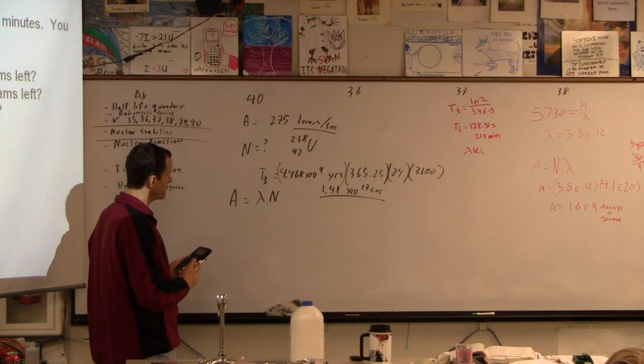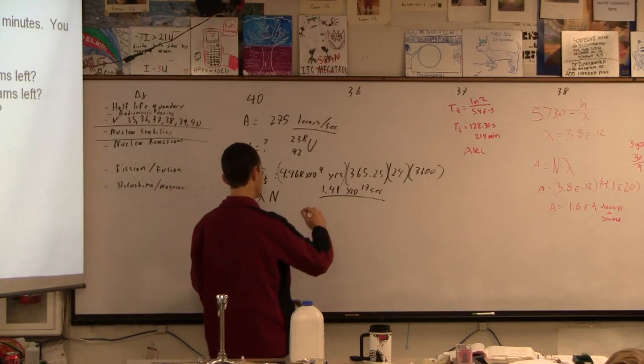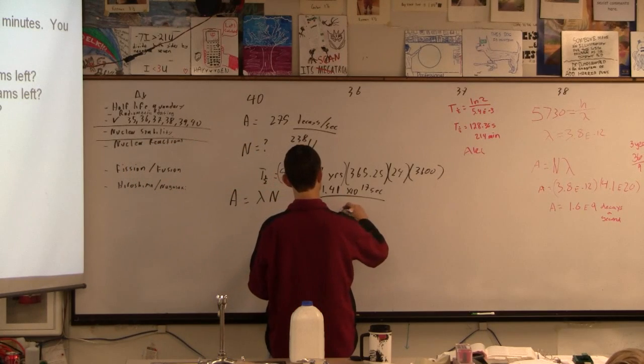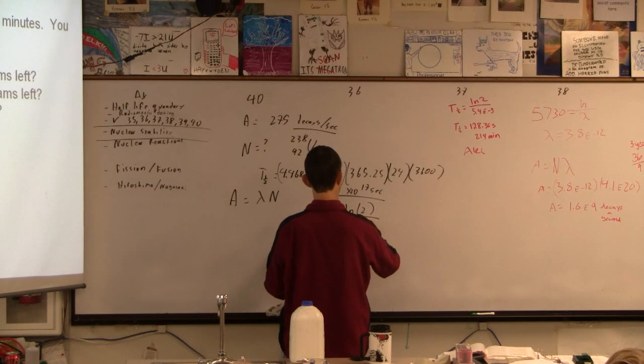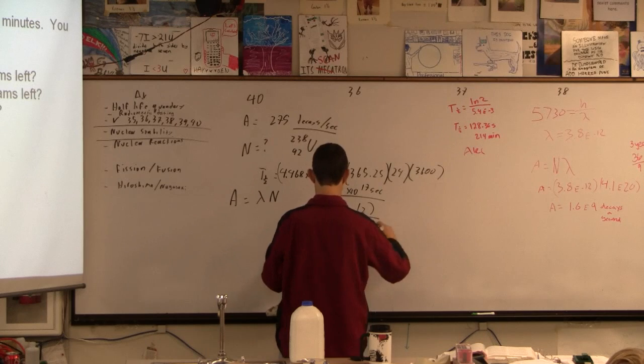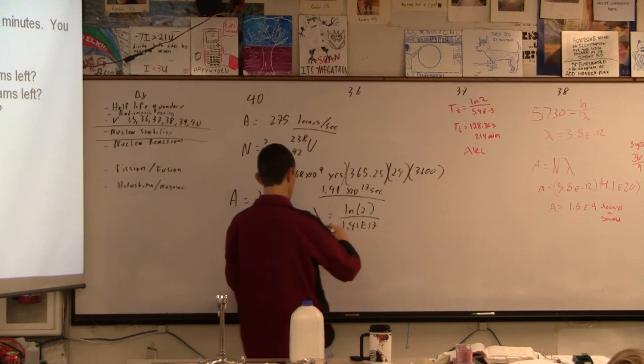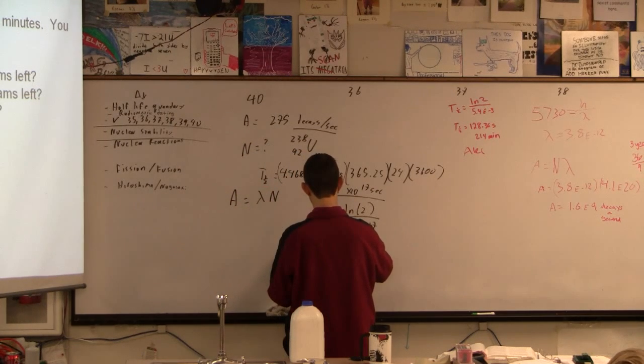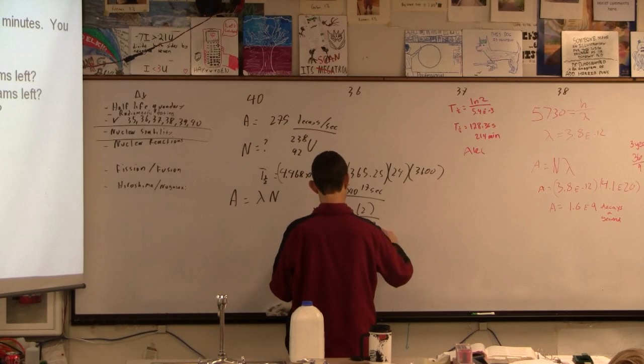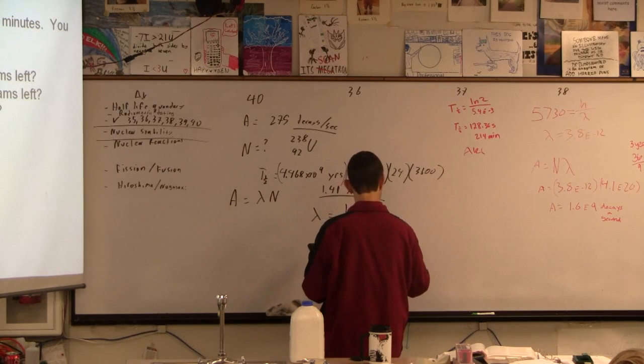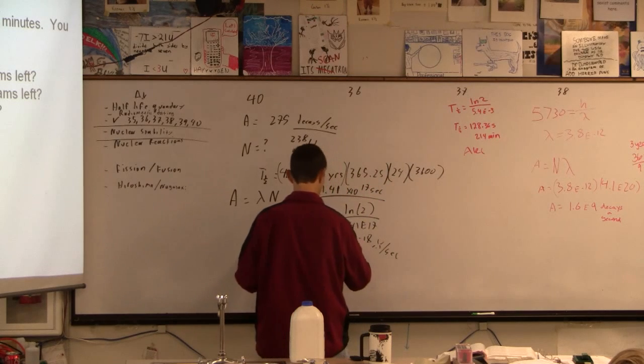And then now we're all set because the lambda is going to be natural log of 2 divided by that. So I'm going to raise that to the negative 1, multiply by the natural log of 2, and the decay probability is vanishingly small. This is the probability per second.